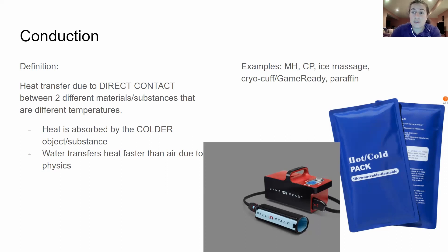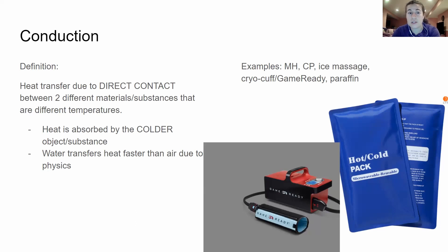Conduction is the first type of heat transfer. This is when heat is transferred through direct contact between two different materials, substances, or surfaces that are at different temperatures. The heat from the warmer source is absorbed into the cooler one. For example, if you have a hot pack and place it on somebody's wrist, the hot pack transfers energy as warmth into the skin, which is colder than the hot pack. The opposite is true with a cold pack.